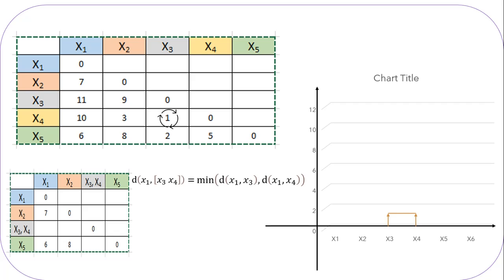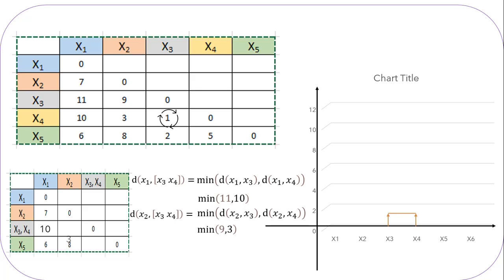Distance from x3 to x1 is 11 and distance from x4 to x1 is 10, and 10 is the minimum between the two. So the distance from cluster x3-x4 to data point x1 will be 10. By the same method, we find the distance from cluster x3-x4 to x2. Distance from x3 to x2 is 9 and distance from x4 to x2 is 3. The minimum value between 9 and 3 is 3, so the distance from cluster x3-x4 to data point x2 is 3.